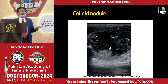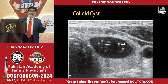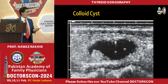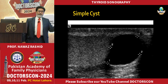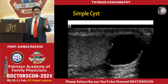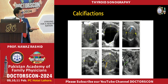This is the comet-tail artifact, which is present in the follicles of the thyroid. This is a cardinal sign — if you see comet-tail artifacts, it is benign unless proven otherwise. Differentiate a simple cyst from a colloid cyst: colloid cysts show comet-tail artifacts due to glycoproteins. Peripheral calcification is also a benign finding; punctate calcification can also occur.